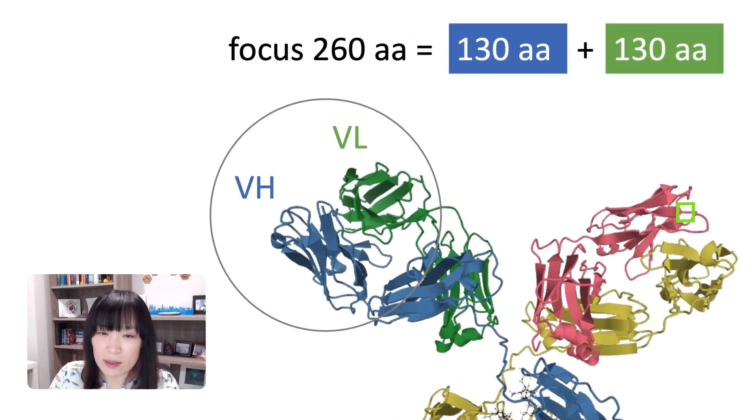And if we zoom in on the lobster claw part of the antibody, we have two units called the VH and VL or variable heavy and variable light. And those two are kind of the important parts of the antibody. So if you focus in on that area, that's about 260 amino acids total. About 130 comes from the VH or the heavy chain. And about another 130 comes from the VL or the light chain.